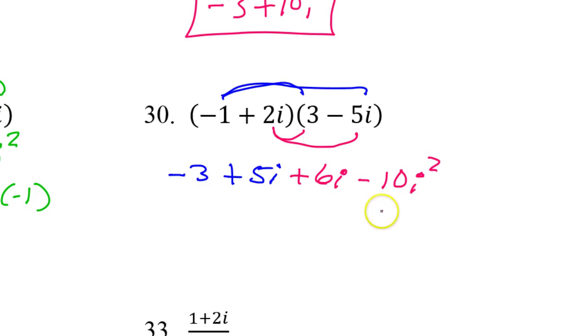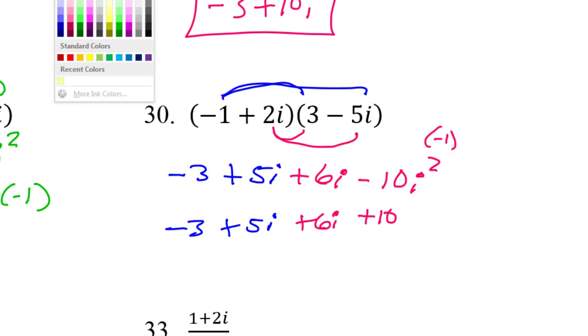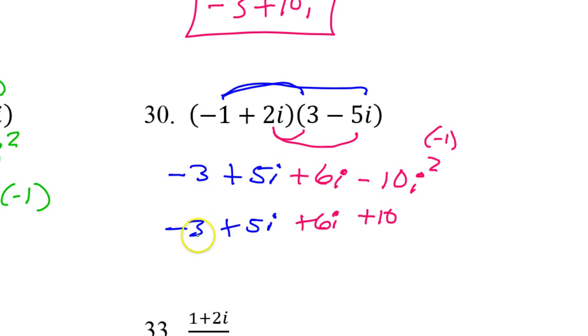That's a little negative 1. Remember that this i squared is really a negative 1. That's going to change this over to a positive 10. All right? So the rest of it is still what it is. All right? And then you just combine like terms and that's it. So negative 3 and positive 10, that's 7. 5i and 6i, that's 11i. So that should be your answer to number 30.